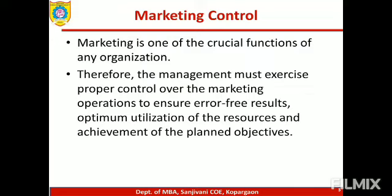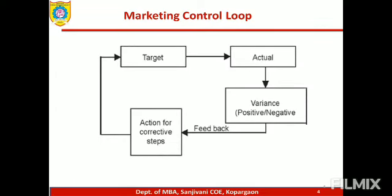It is very important to understand the marketing control loop. The first step is to set the marketing target — such as a sales target, brand awareness target, or profitability target. Then measure it against actual performance in the market. Analyze the variance, whether positive or negative, go back to the market, understand the feedback, and take corrective actions.